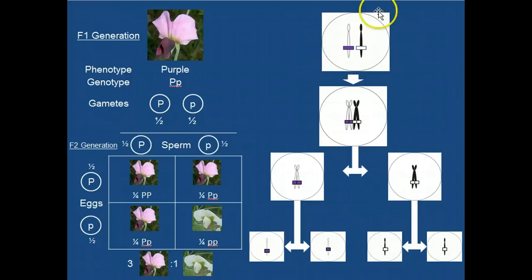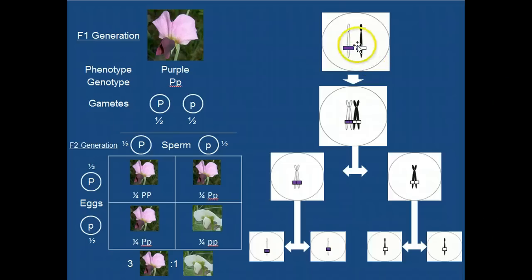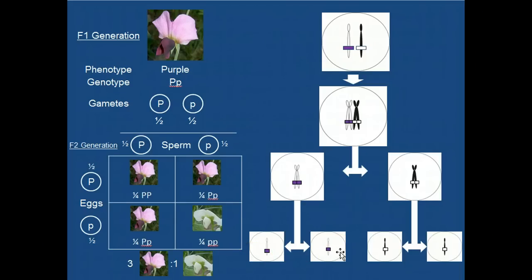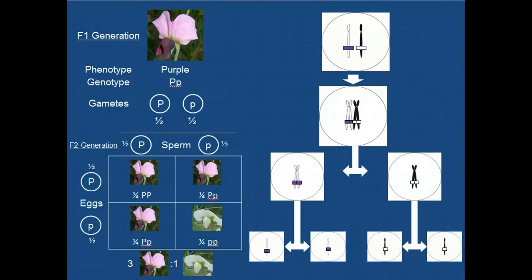Here's a cell in the G1 phase of the cell cycle for this individual. If the cell undergoes meiosis to produce gametes, half of those cells will contain the purple allele and half of those cells will contain the white allele.